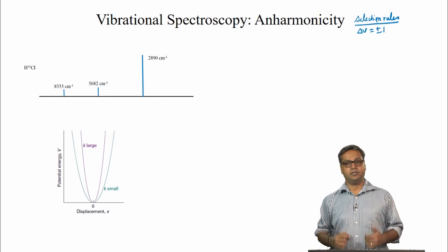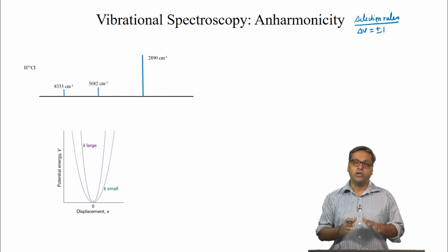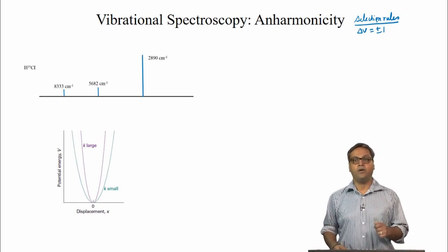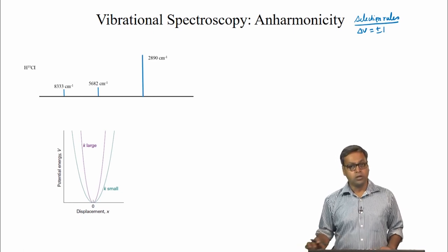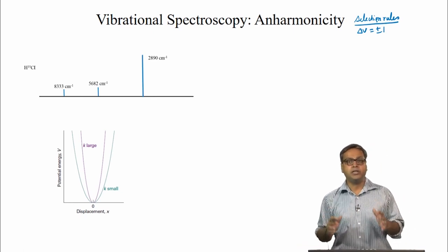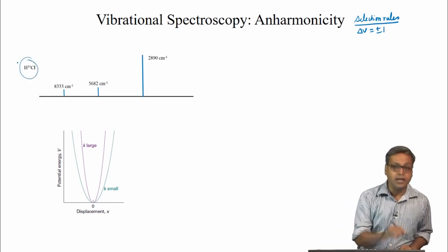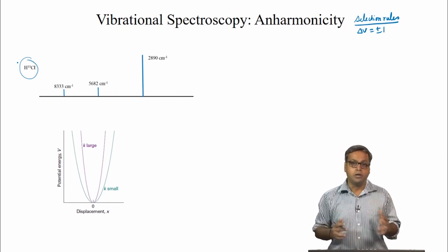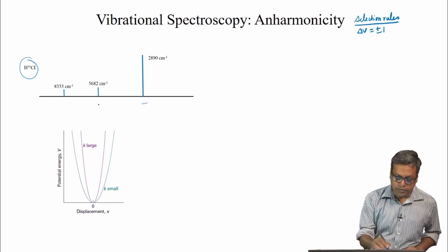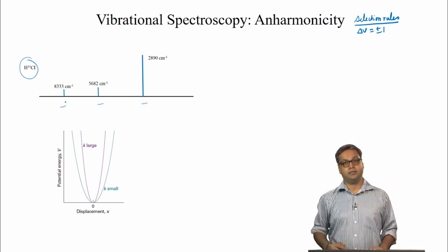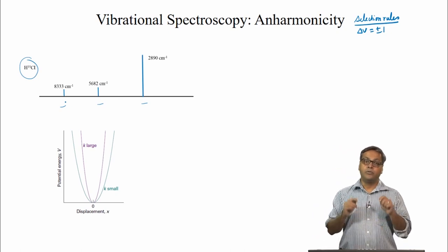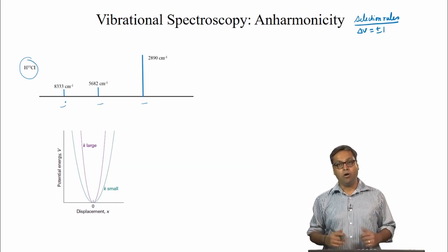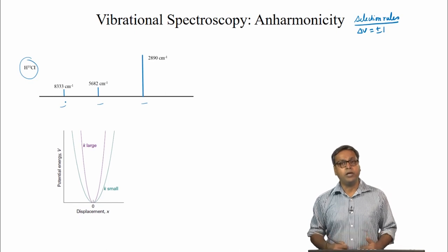As all the energy levels in a harmonic oscillator are equally spaced, this means that the IR spectrum should have a single line. But when we see the experimental spectrum of HCl, we do not see a single peak. What is observed is a series of peaks with diminishing intensity. This is because real molecules do not exactly follow simple harmonic motion, or we can say they do not obey Hooke's law.